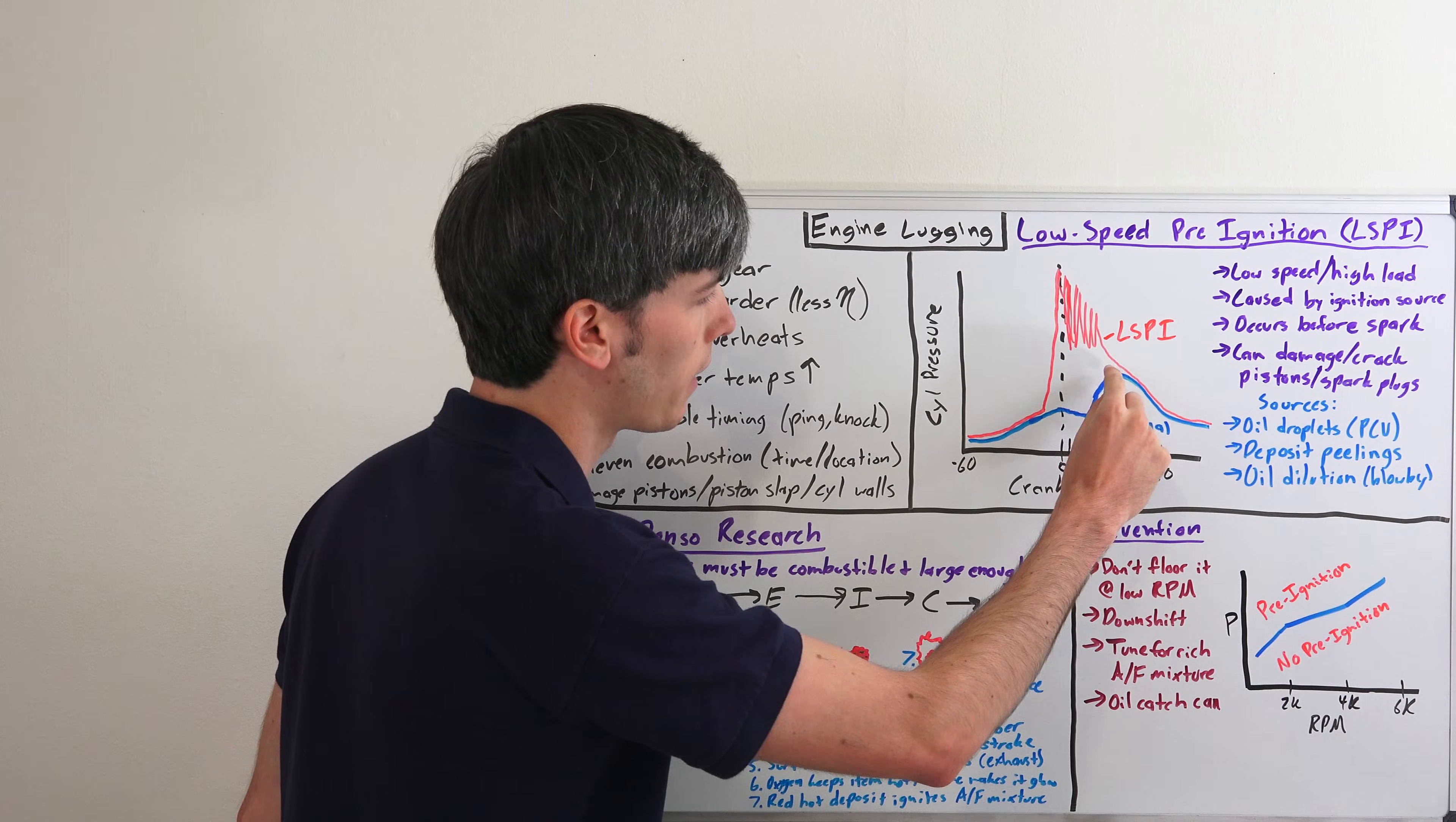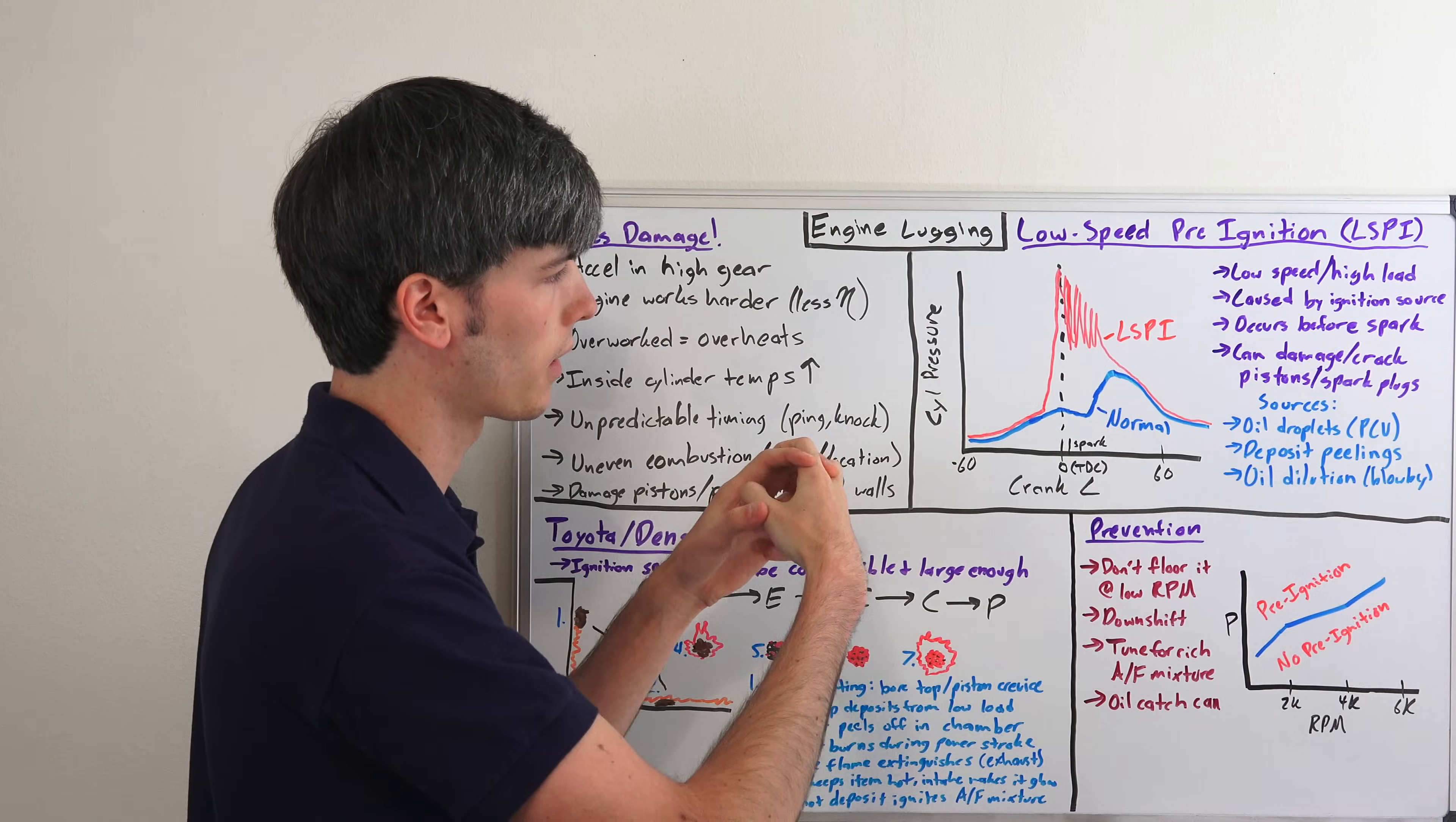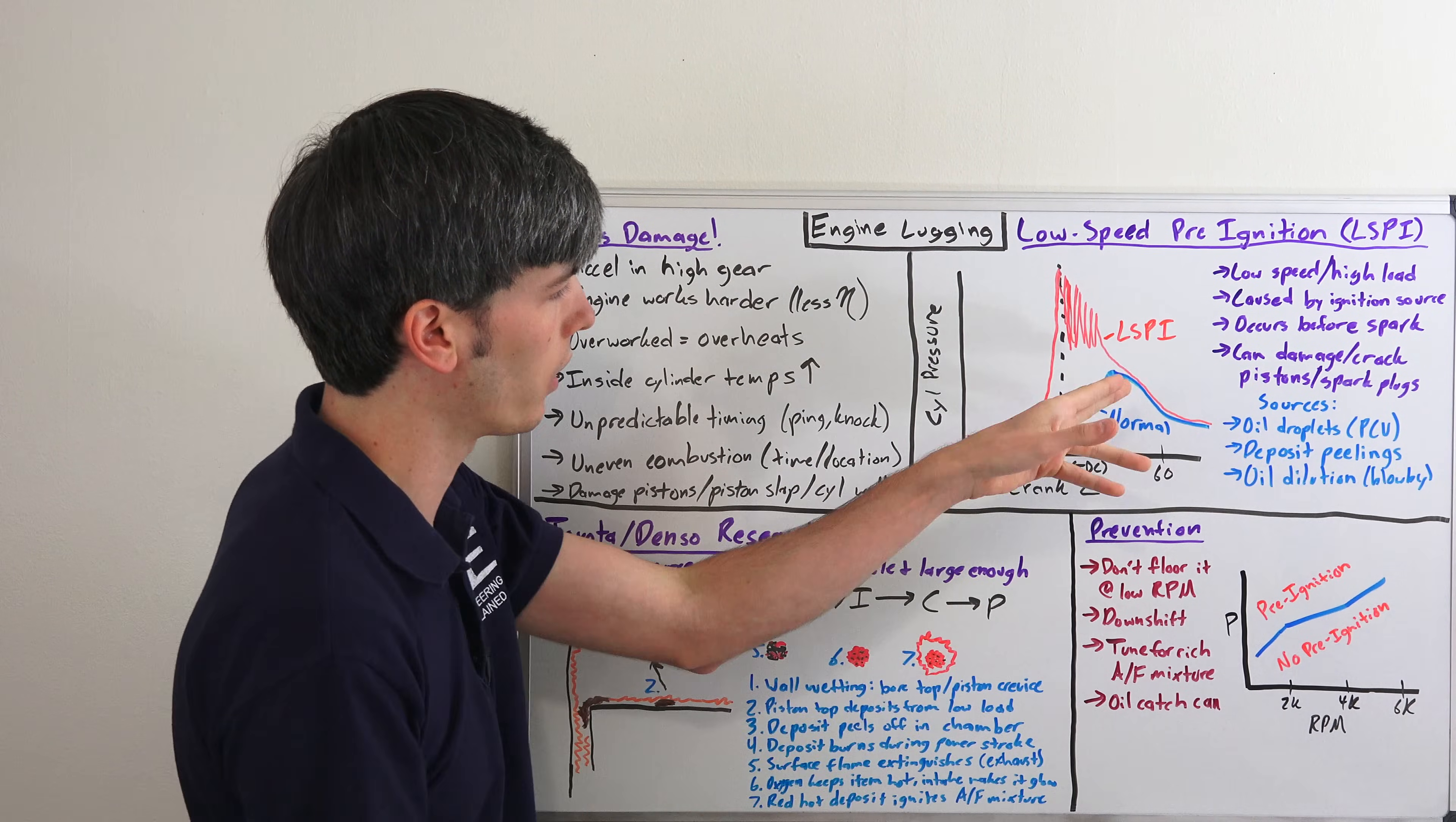With normal combustion you'll have your pressure kind of spike up as you reach top dead center. Your spark fires and then you have that peak of pressure as that cylinder is moving down and as that combustion occurs and expands out that air and fuel mixture which is now burning.